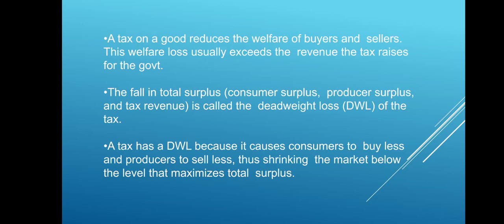The total surplus is the sum of consumer surplus, producer surplus, and the tax revenue. The tax revenue is the product of the tax and the quantity. The fall in total surplus is called the deadweight loss (DWL) of the tax. A tax has a DWL because it causes consumers to buy less and producers to sell less, thus shrinking the market below the level that maximizes the total surplus.